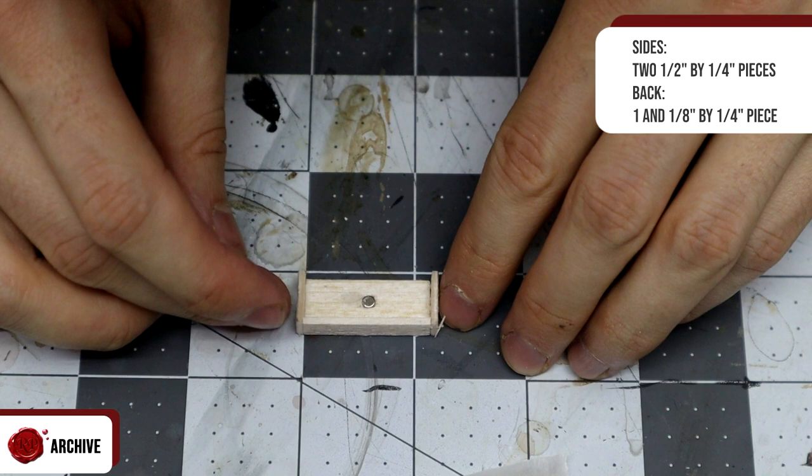I drilled a 3mm magnet hole in the middle and gel super glued one in, south side facing down. I used two half an inch by 1/4 inch pieces as the sides, and a 1 and 1/8 of an inch by 1/4 inch piece at the back which I tacky glued on. I also added the 3/16 of an inch by 7/16 of an inch piece to the middle separating the shelves.